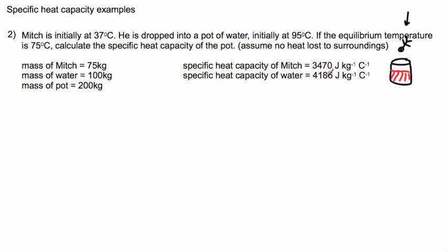We're given the specific heat capacity of the water is again 4186 joules per kilogram per degree Celsius. We also are given Mitch's specific heat capacity. It turns out you could actually figure out how much energy it takes to raise the temperature of a human. It's around 3470. This is a fairly okay number to put in.